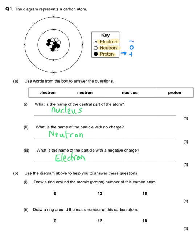The next part says use the diagram to help you answer these questions. Draw a ring around the atomic — or proton — number for this atom. The atomic number is the number of protons, and it's got that clue in brackets. We need to look at the black circles and count them up: one, two, three, four, five, six — so the atomic or proton number is six. Incidentally, that's also why there are six electrons.